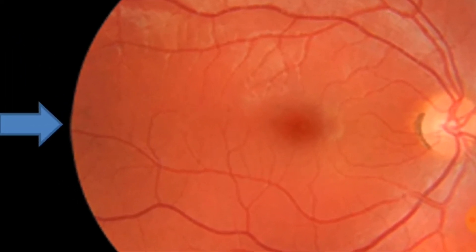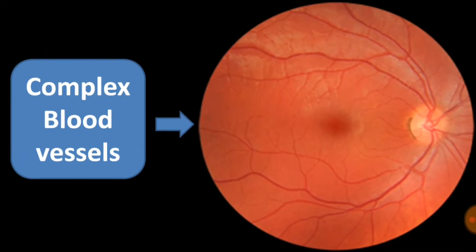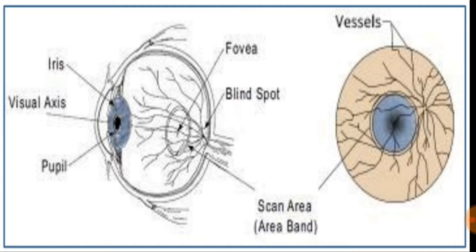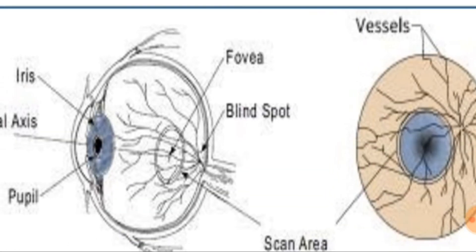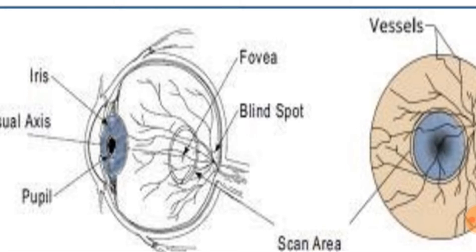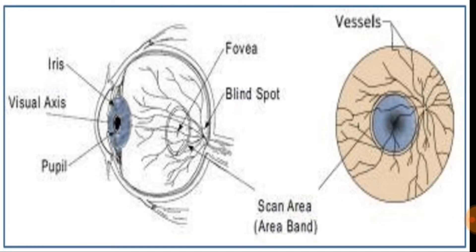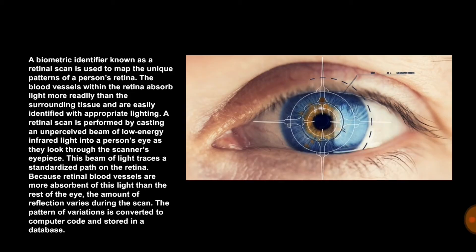The network of blood vessels in the retina is so complex that even identical twins do not share a similar pattern. Although retinal patterns may be altered in cases of diabetes, glaucoma, or retinal degenerative disorders.